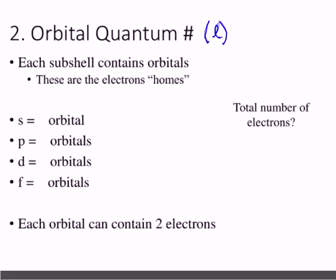Going back to the boarding house analogy from the worksheet — the floor is your energy level. Within a floor, you have rooms. That's what the orbital quantum number is like: it's like the sunny room or the pink room — the different rooms on the floor.